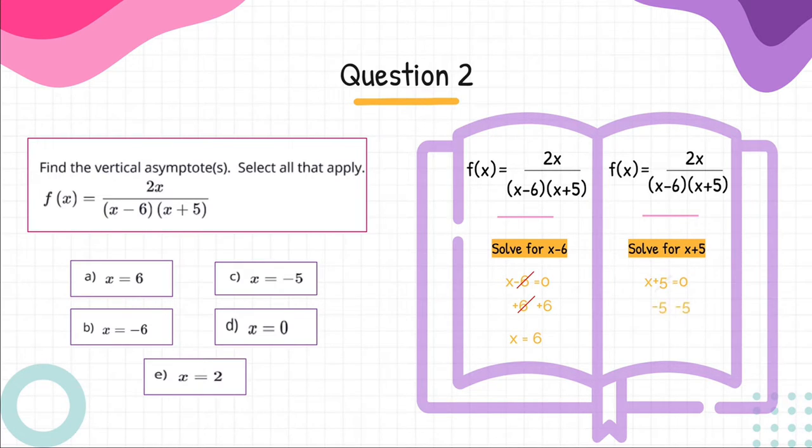Step 2: Set the factor x plus 5 in the denominator to zero and solve for x. x equals negative 5.